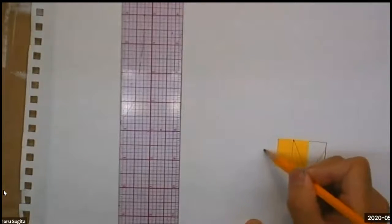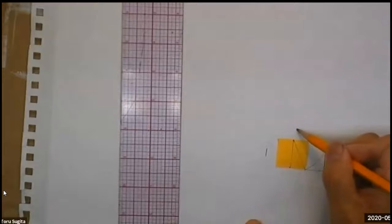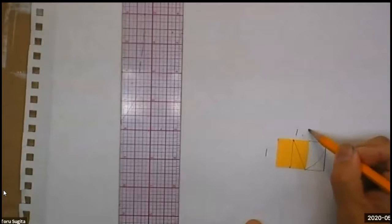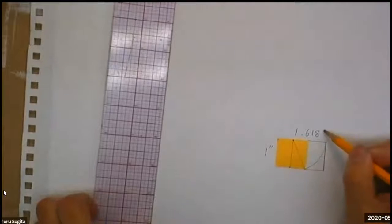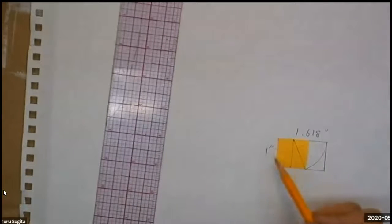So the ratio is 1 to 1.618. So that's the ratio of golden rectangle.